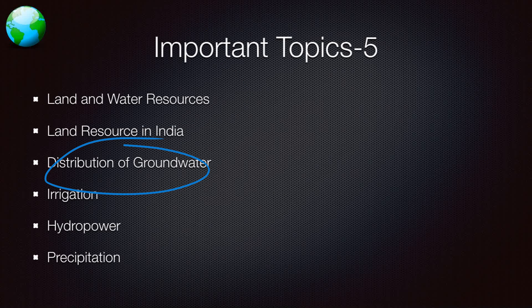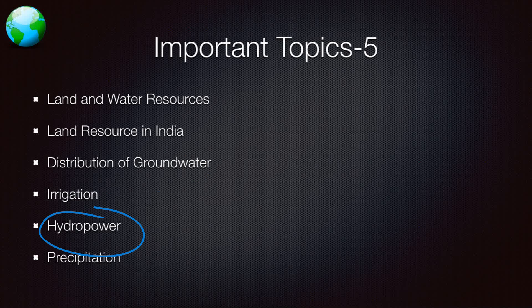Land resources in India, distribution of groundwater — again a very, very important concept. Irrigation — very, very important; it is mentioned in GS Paper 3 also directly. Hydropower, precipitation — all these are very, very important. What are the types of precipitation, which areas of India receive highest precipitation, low precipitation, monsoon.